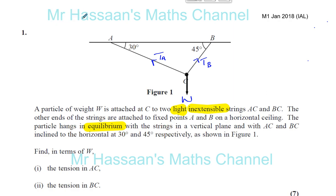The particle hangs in equilibrium — a very important word here. Equilibrium is the key to answering this question. When it says equilibrium, it means there are no resultant forces; all the forces in every direction cancel each other out, with the strings in a vertical plane. AC and BC are inclined to the horizontal at 30 and 45 degrees as shown. We've got to find, in terms of W, the tension in both strings AC and BC.